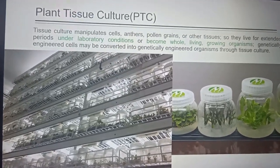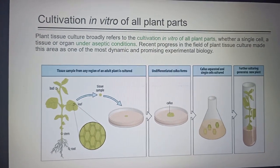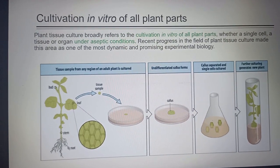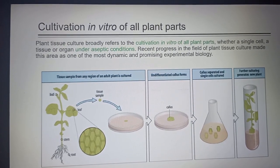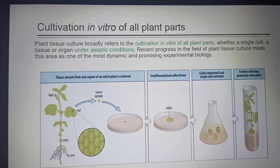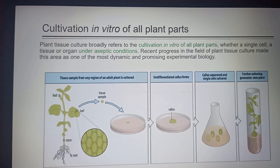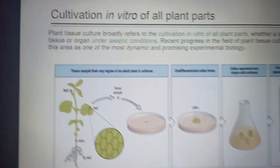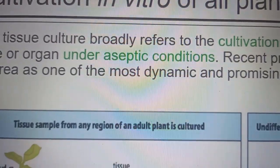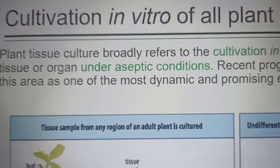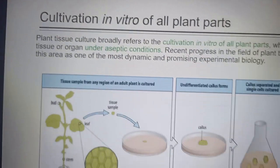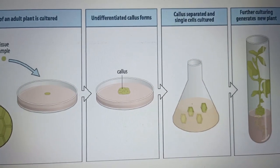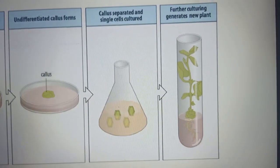Plant tissue culture broadly refers to the cultivation in vitro of all plant parts. In open environments, plants require sunlight, microbes, soil, water, and nutrition. But in plant tissue culture, cultivation is done inside a bottle under in vitro conditions and under aseptic conditions — free of microbes — in a clean environment. Taking a single cell and placing it in artificial medium, it will develop into a whole plant.